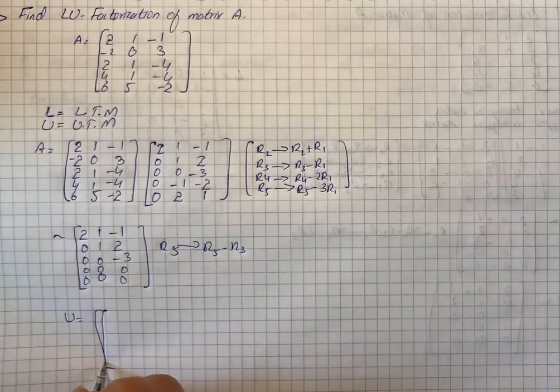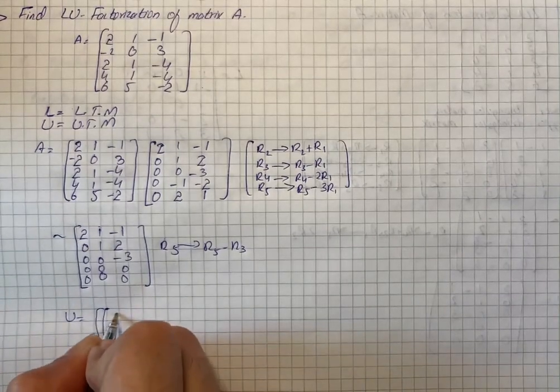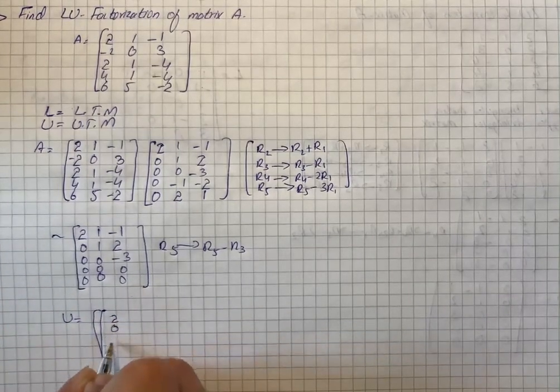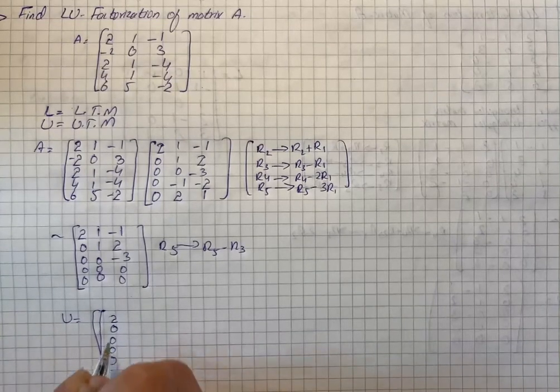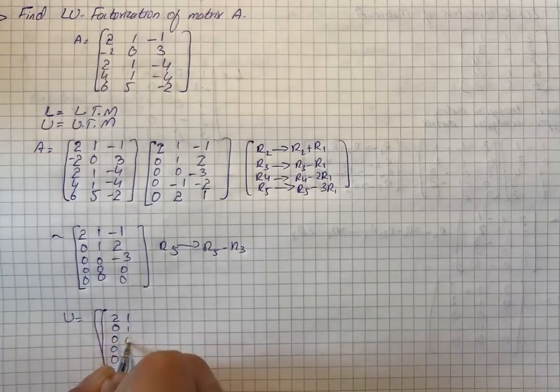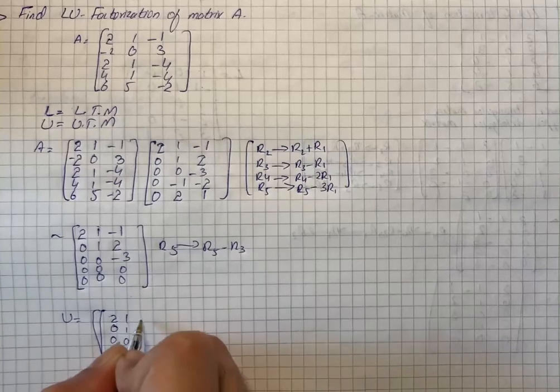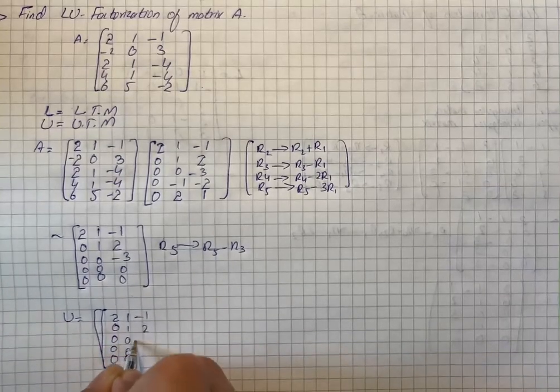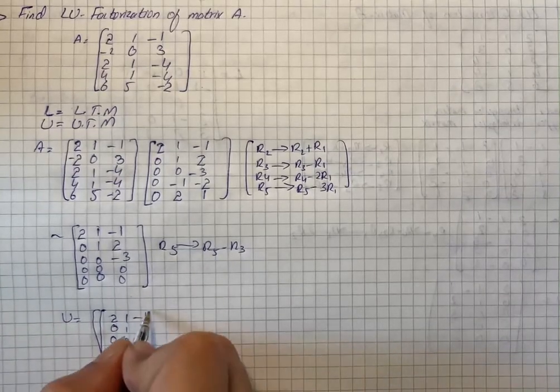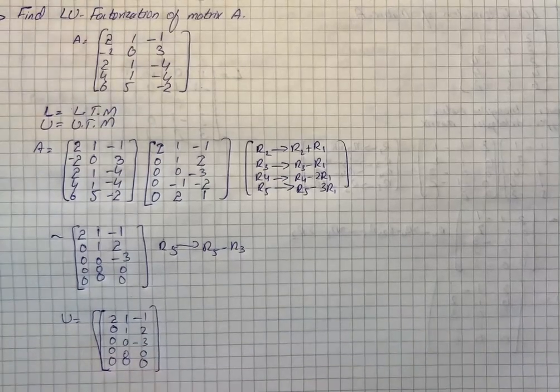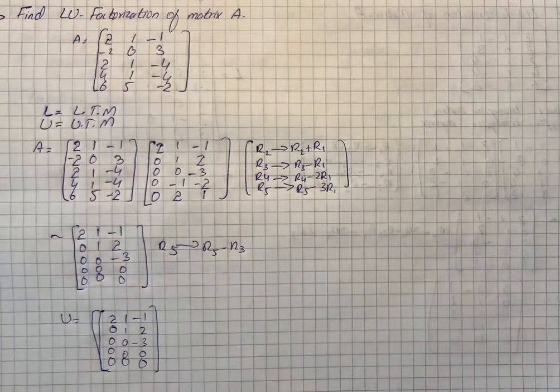Sorry let me write the matrix again. That is equal to 2, 0, 0, 0, 0; 1, 1, 0, 0, 0; minus 1, 2, minus 3, 0, 0. That is our U matrix.